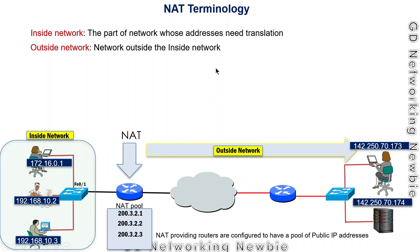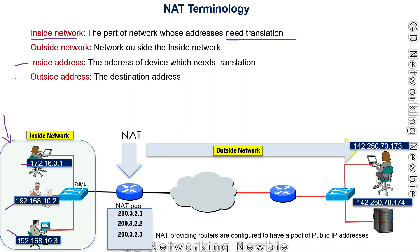There is relevant terminology to understand. The inside network is the part of the network whose addresses need translation — the private side. The outside network is the public internet side. Inside addresses are the addresses of devices that need translation, and outside addresses are the destination public IP addresses.